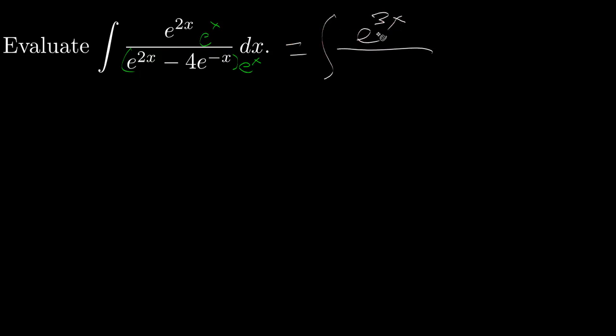So the top becomes e to the 3x, and we get e to the 3x minus 4 in the denominator after distributing.